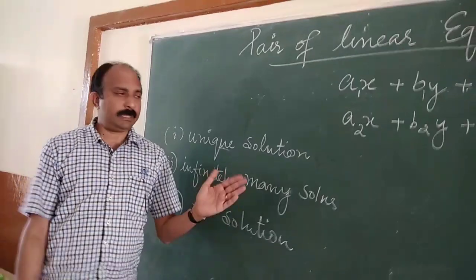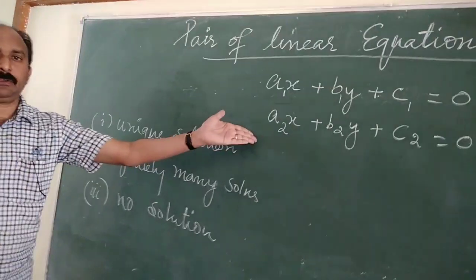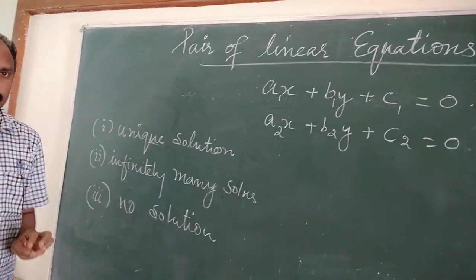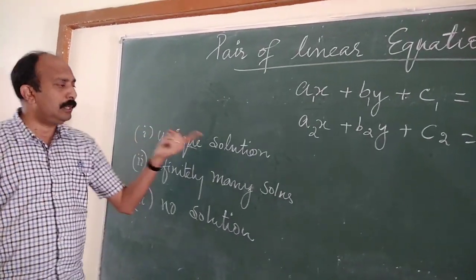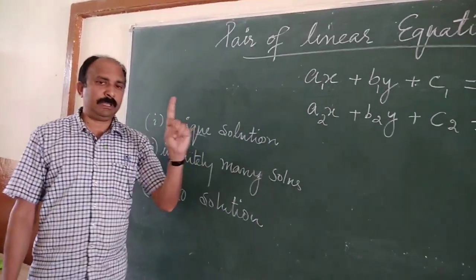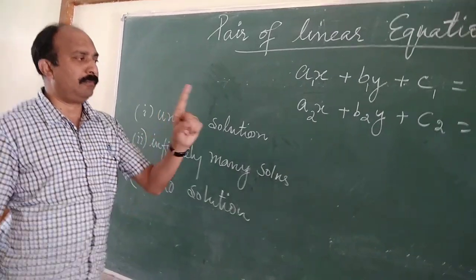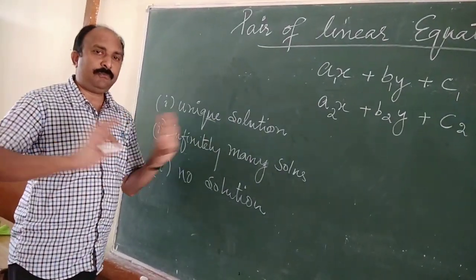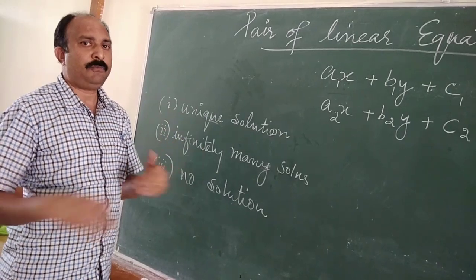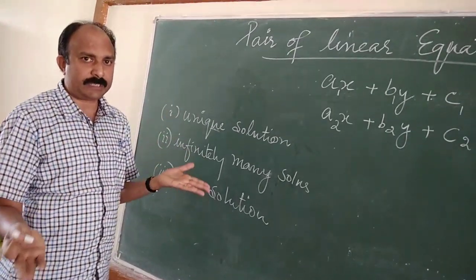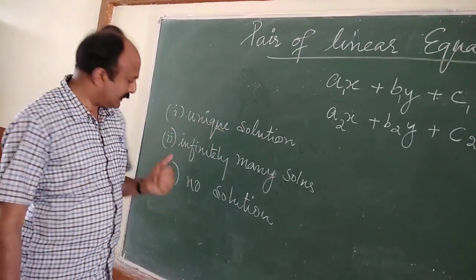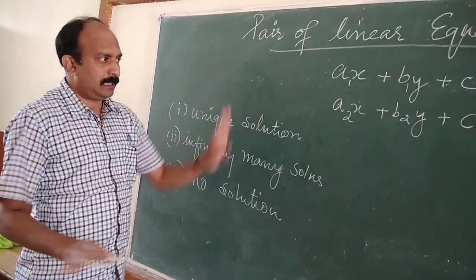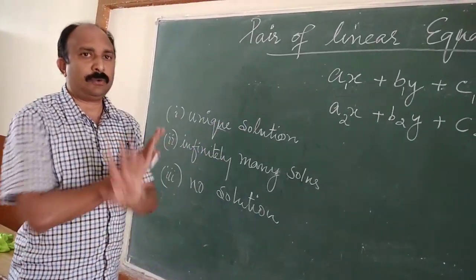I repeat: a pair of linear equations in two variables can have three types of solutions. First, unique solution — only one value of x and one value of y. Second, infinitely many solutions — infinite values of x and y. Third, no solution — this equation system cannot be solved.